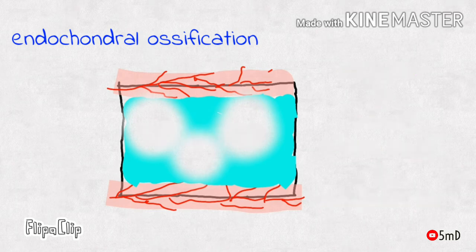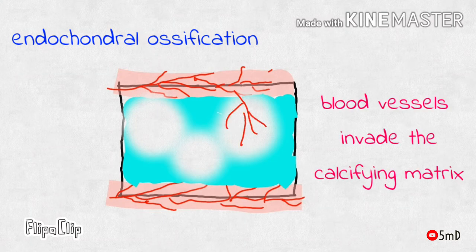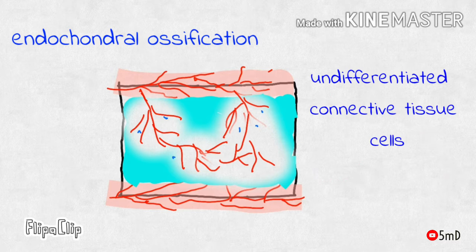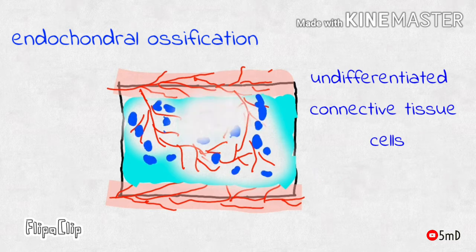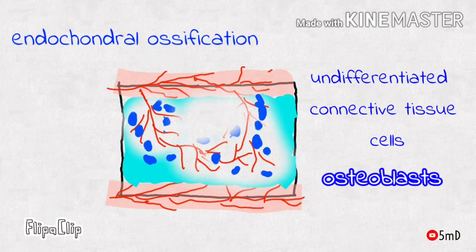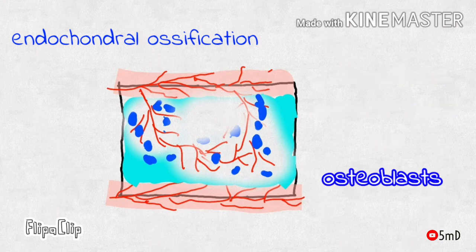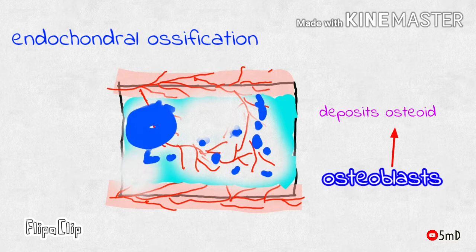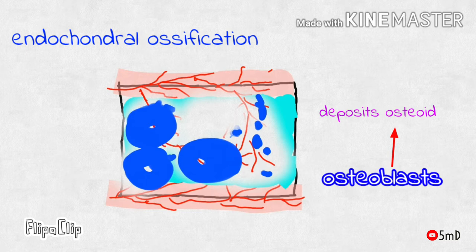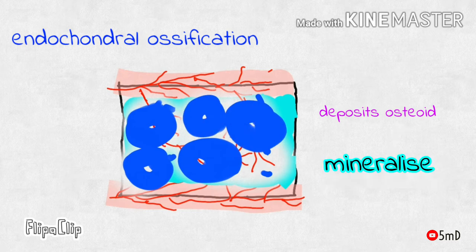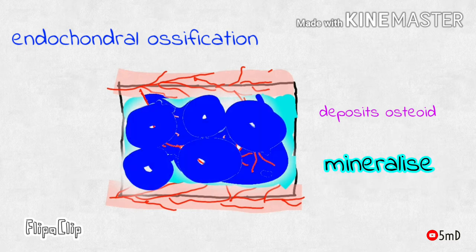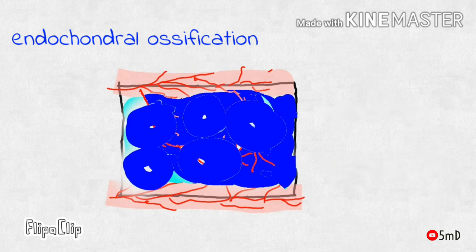Blood vessels from the perichondrium invade this calcifying cartilage matrix and supply within the empty spaces. These blood vessels bring along undifferentiated connective tissue cells which differentiate into osteoblasts. The role of osteoblasts is to deposit fibrous bone matrix, or osteoid, on the remnants of the calcified cartilage matrix, which eventually mineralizes to form bone.